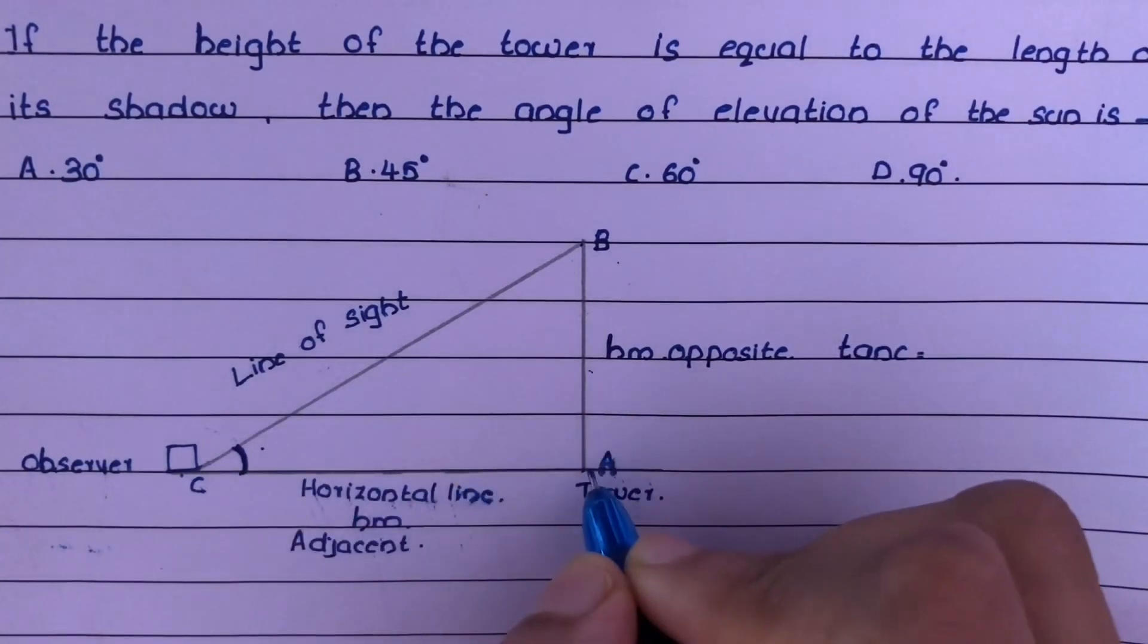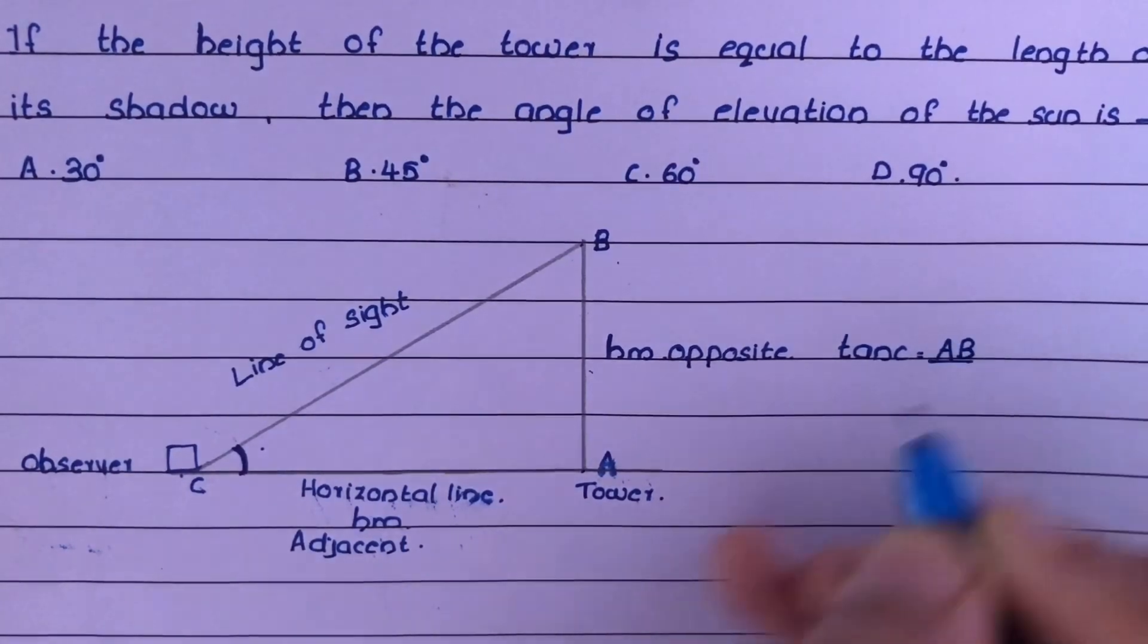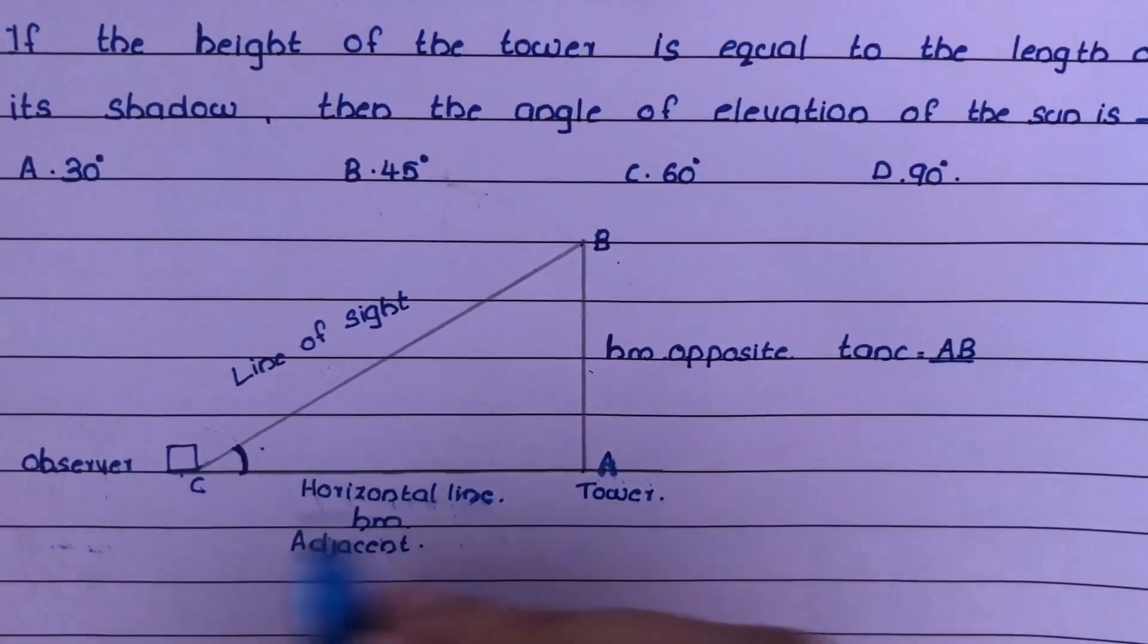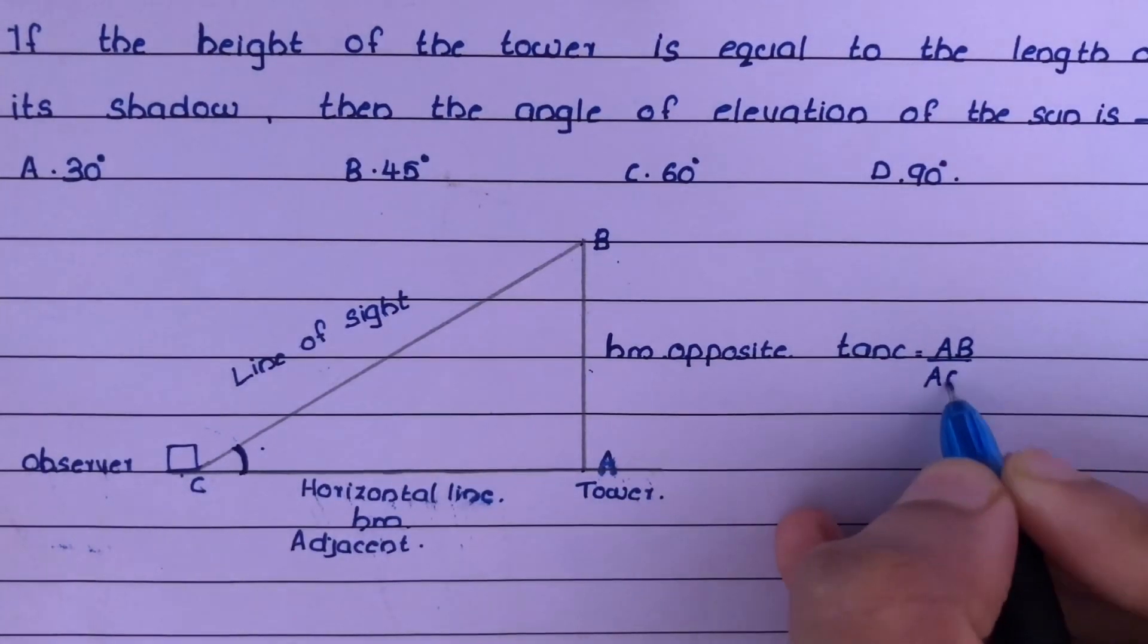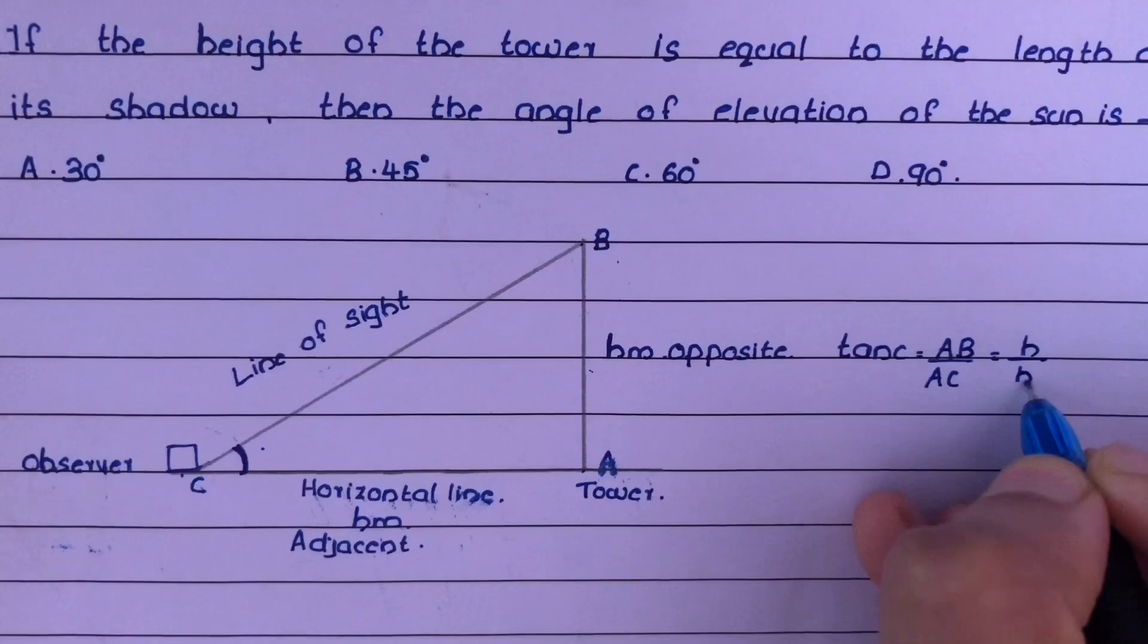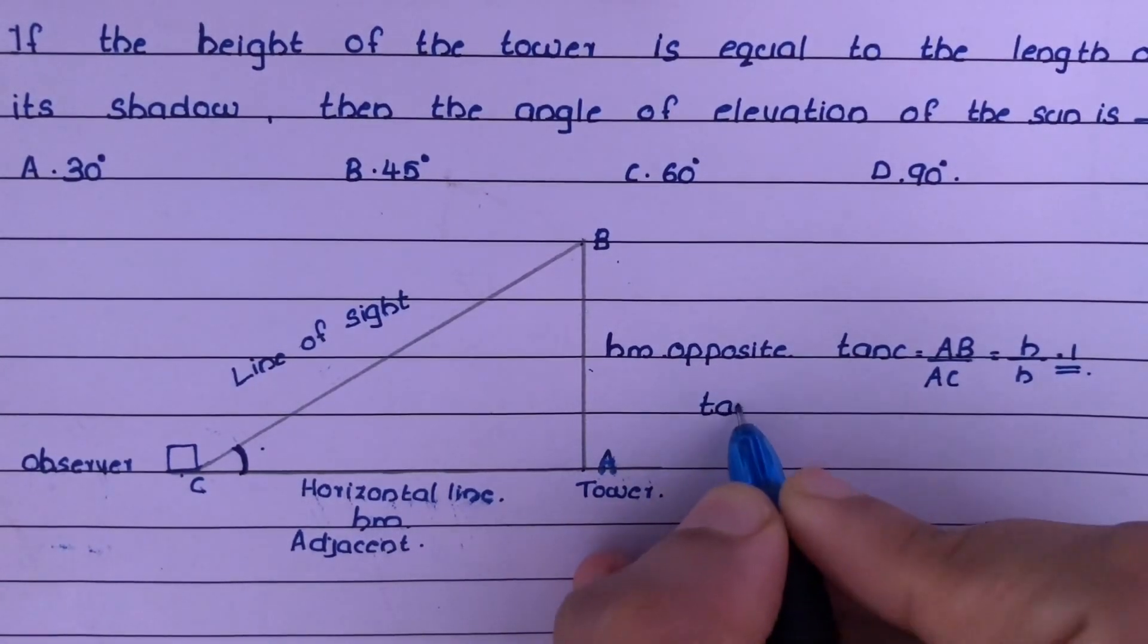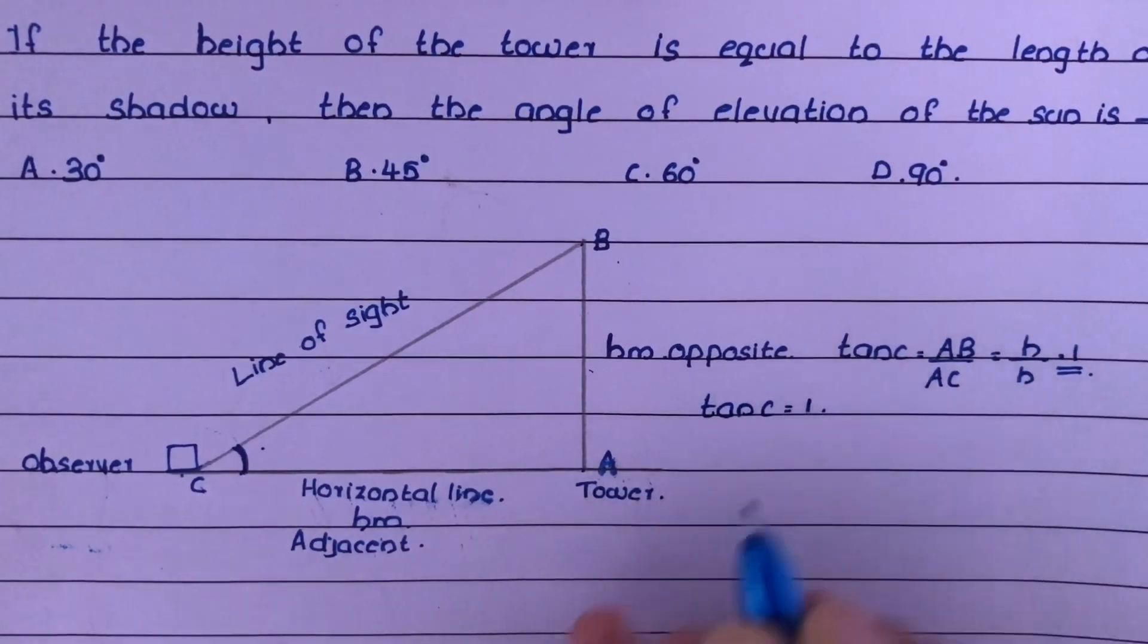With respect to angle C, the opposite side is AB and the adjacent side is AC. So both these lengths are equal, that is H. So H by H equals 1. That is tan C equals 1.